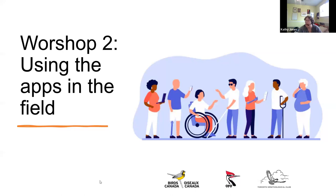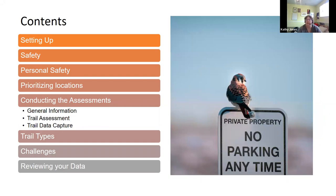The second half is all about using the apps in the field. I'll likely go over this too fast — no adult learner needs to have both visual learning and hands-on learning from a single webinar. But you'll have this, the protocol, and Sandra's excellent module videos, which many of you have already seen. We're going to talk about setting up, personal safety, how to prioritize survey locations, how to conduct assessments, trail types, some challenges, and a little bit on reviewing the data.